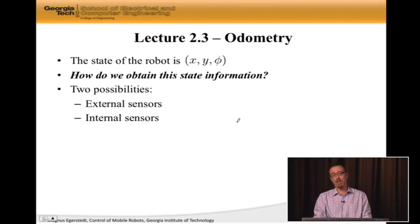That seems to make some sense. So external sensors, ultrasound, infrared, cameras, laser scanners, these are sensors that tell us something externally about where we are.